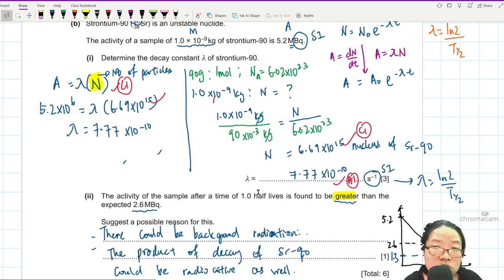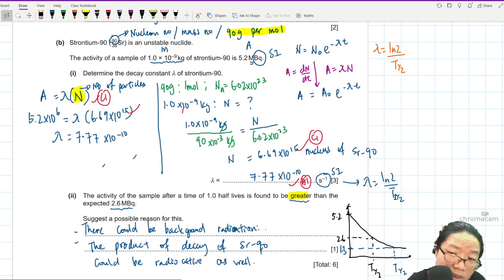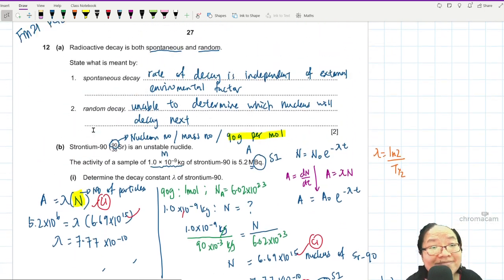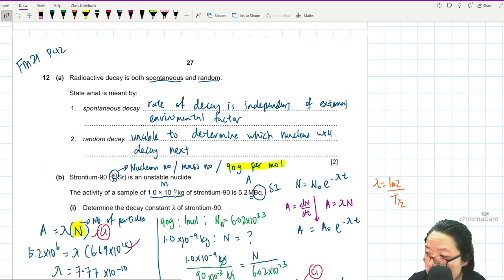Alright. So this is a short question. It's not very long. Which means there are things that they didn't ask you. For example, calculating half-life. And they could also ask you to calculate the activity after a certain time. So please make sure you track out those examples. And that's it for question 12. Thank you.